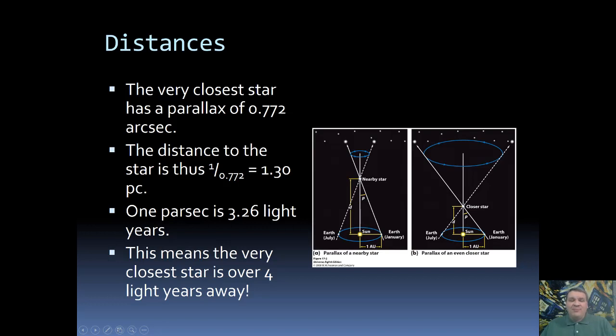And now most people don't think in parsecs so we're going to convert. One parsec is about 3.26 light years. So 3.26 times 1.3, this means that the very closest star to us is over four light years away. In other words they are really far.